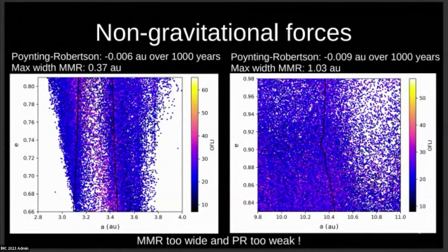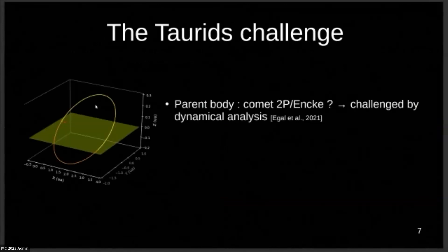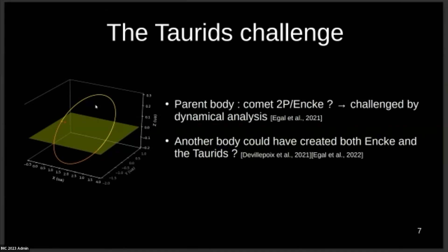Here I give you a quick overview of the kind of mechanism I could find for the Draconids and Leonids. Now it's time to talk about the Taurids. For the parent body, first of all, we thought it was Comet 2P Encke, but recently, Orion Egal actually showed that it might not be the case with autonomic analysis. The current hypothesis is that another body could have created both Encke and the Taurids, but we don't have a precise idea. We have some ideas of what the body could be, but it's not so sure yet. This is the challenge part of the Taurids challenge of my title.